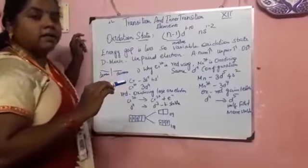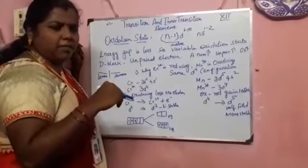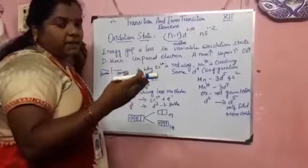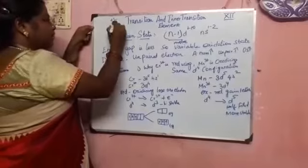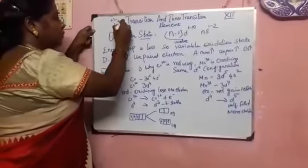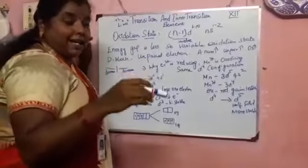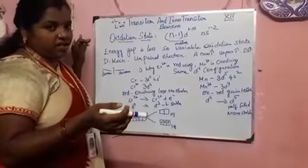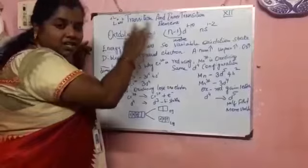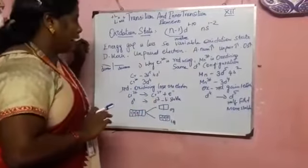In transition elements, a lot of variable oxidation states are present. Variable means it has more than 2 or more than 3 different oxidation states. For example, lithium has a fixed oxidation state of plus 1 only, and sodium also has plus 1. But when you compare with iron, it has plus 2 or plus 3 oxidation states. That is called variable. The D-block elements also show variable oxidation states.